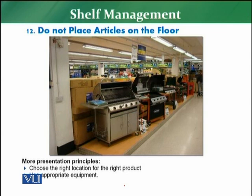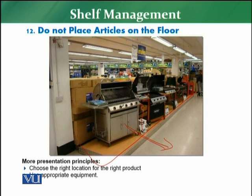The next principle is about not placing articles on the floor. This is a very basic principle — products should not be directly placed on the floor. If a product is displayed on the floor, it gives the worst image of the product. It should be on a proper rack, whether it is food or non-food. The product should not contrast with the store surface — it should be on pallets, hangers, or shelves, because that is the objective of proper presentation.